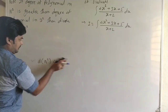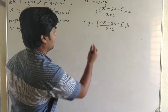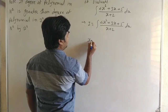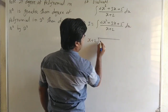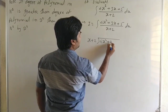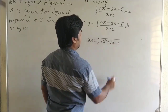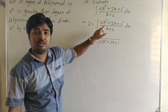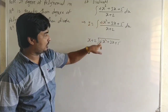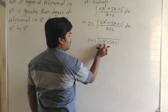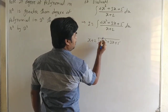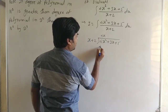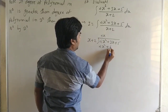Now we take the division of the two terms. See carefully: divisor is (x + 2), dividend is (4x² + 3x + 5). Since the degree of the polynomial in the numerator is greater than the degree of the polynomial in the denominator, we divide numerator by denominator. For the first step, 4x² divided by x gives 4x.